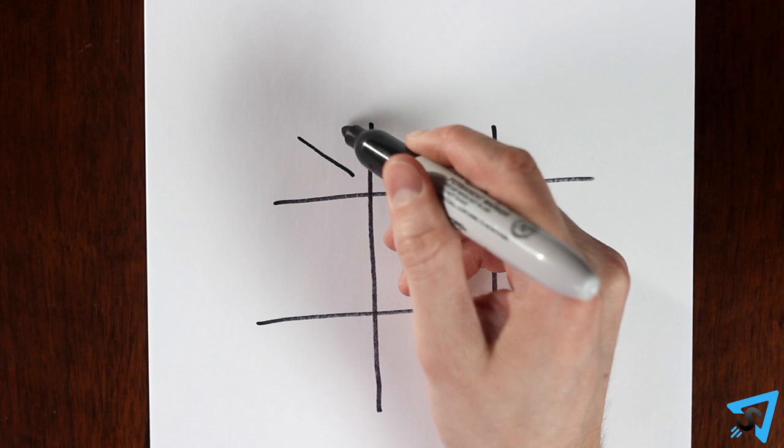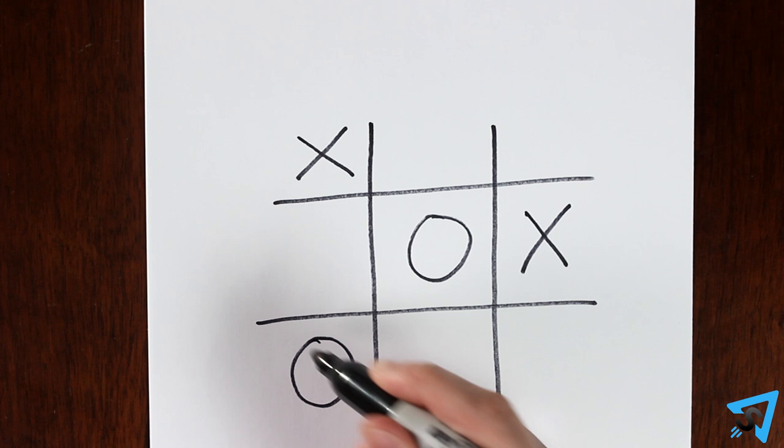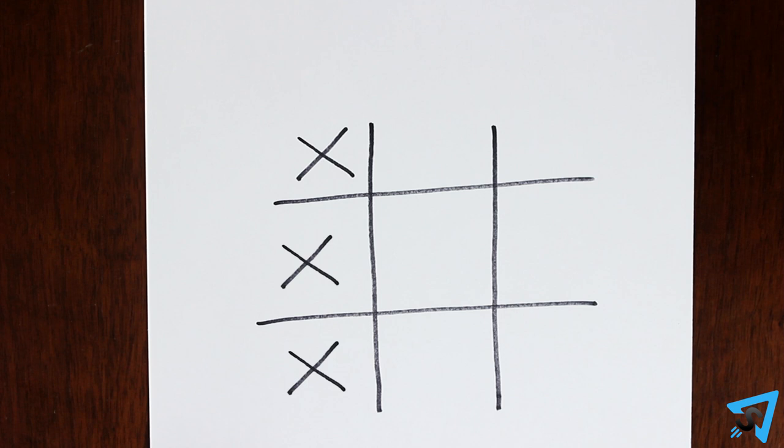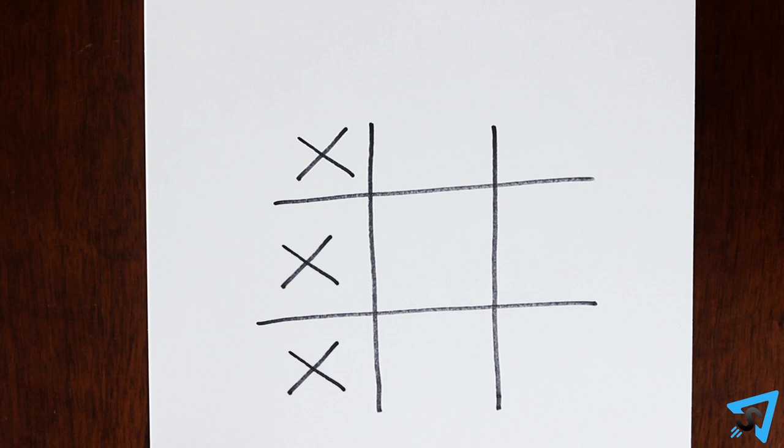Each player picks a symbol to represent them, X's or O's. Alternating turns, each player picks one empty space and writes their symbol in it. The first player to get three in a row horizontally, vertically, or diagonally wins.